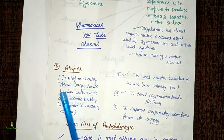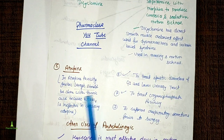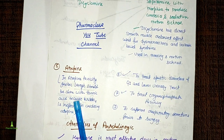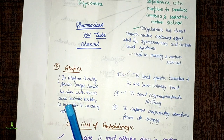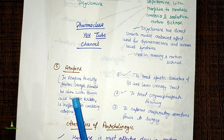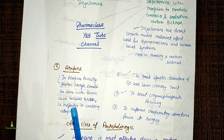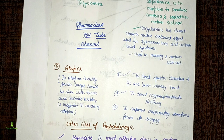Regarding atropine toxicity: gastric lavage should be done with tannic acid. KMnO4 is ineffective in oxidizing atropine. So in atropine poisoning, we use tannic acid for gastric lavage.